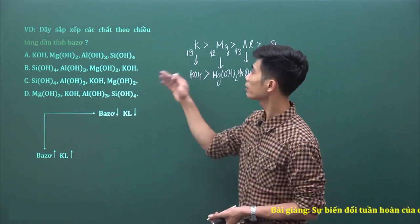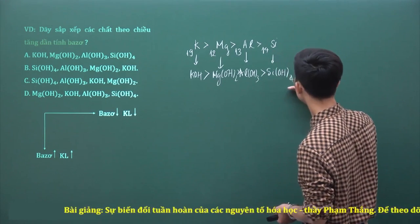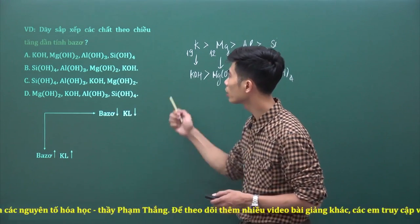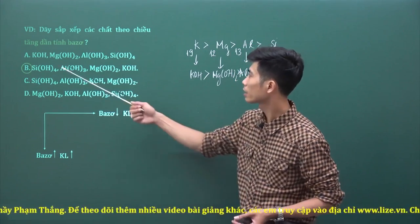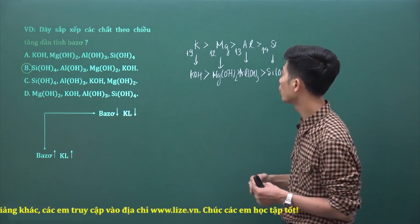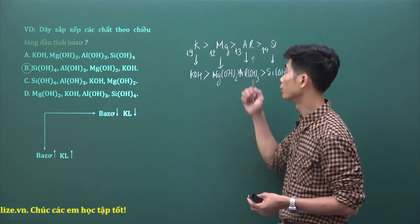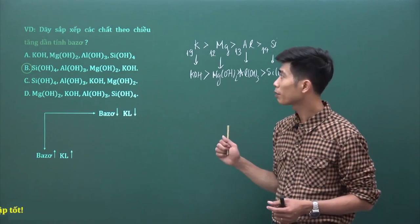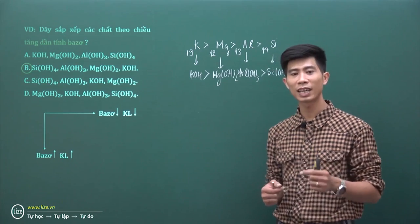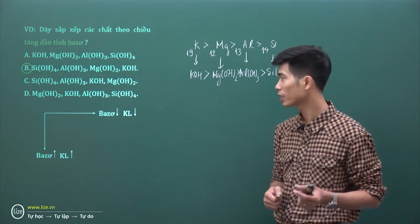Tính bazơ tăng dần phải là từ Silic đến Kali. Đáp án đúng chỉ có đáp án B. Tăng dần tính bazơ vì các nguyên tố trong cùng một chu kỳ, chỉ mỗi Kali ở chu kỳ khác. Thầy đã giới thiệu xong ví dụ này, các em phải nhớ cách xác định tính bazơ và tính acid của các hydroxide trong một chu kỳ và một nhóm.